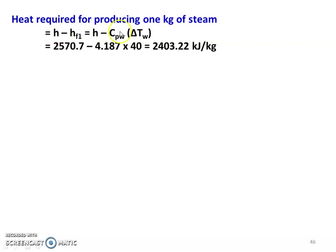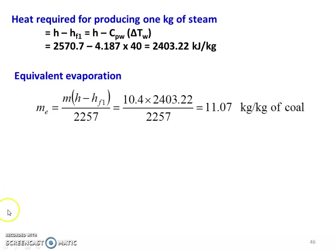Heat required for producing 1 kg of steam: H minus H_f1 = H minus C_pw × ΔT_w, where ΔT_w is the feed water inlet temperature. So, 2570.7 minus 4.187 × 40 = 2403.22 kJ/kg. Equivalent evaporation: M_e = M × (H minus H_f1) divided by 2257 = 10.4 × 2403.22 divided by 2257 = 11.07 kg per kg of coal.